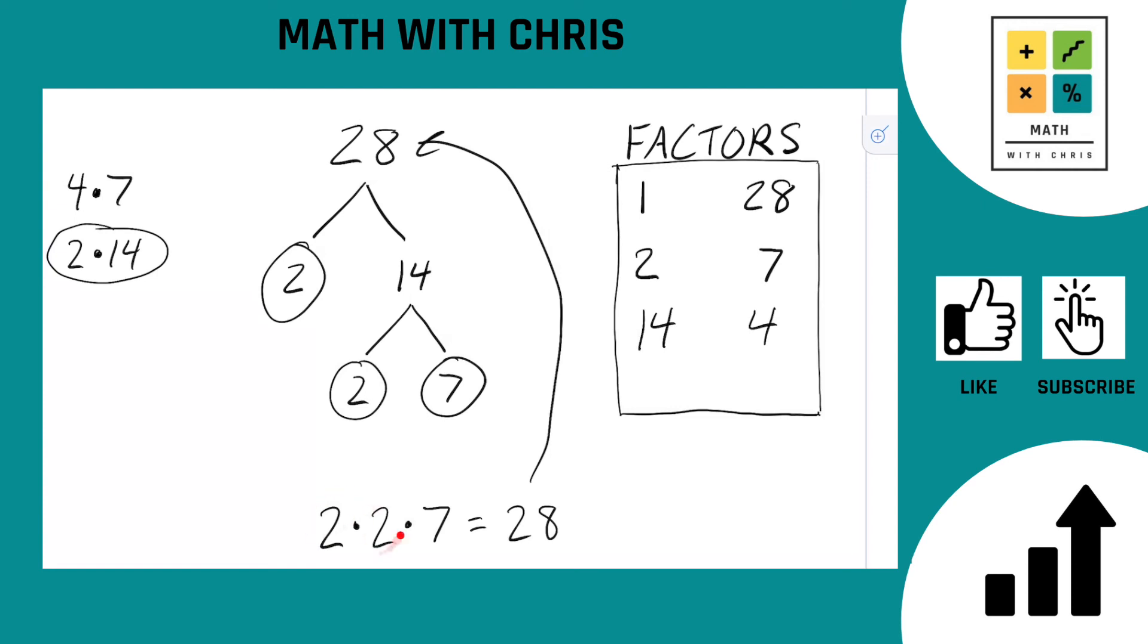Anything else? 2 times 2, 4. 2 times 7, 14. We're done. We got 6 factors of 28: 1, 2, 4, 7, 14, and 28.